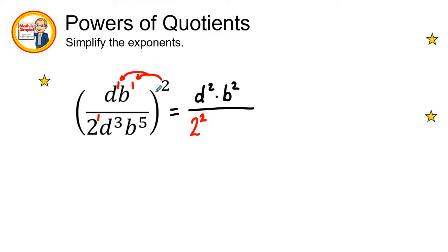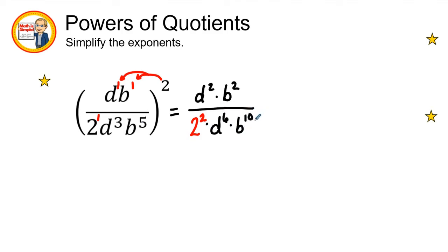3 times 2 is 6, so we have d to the sixth power in the denominator, and 5 times 2 is 10, so b to the tenth power. Now let's go ahead and simplify.